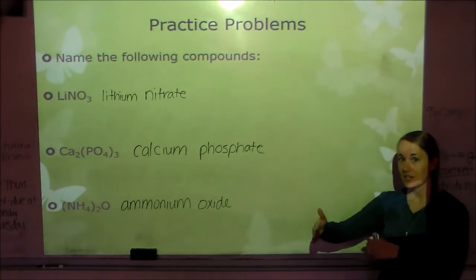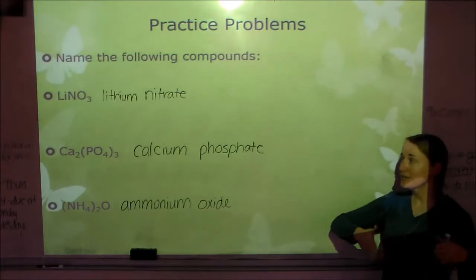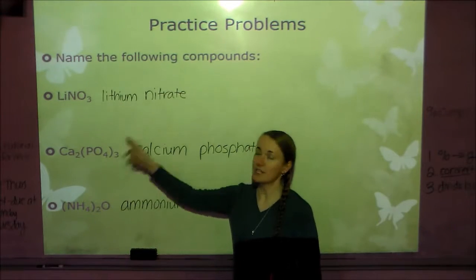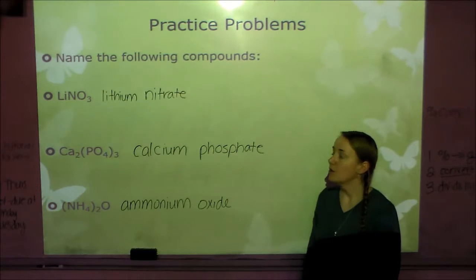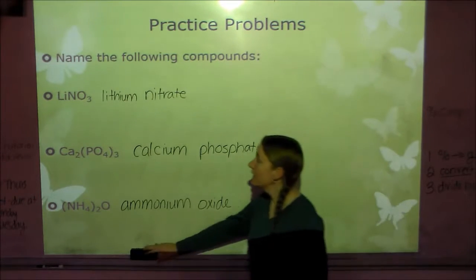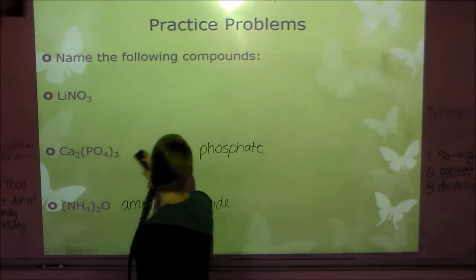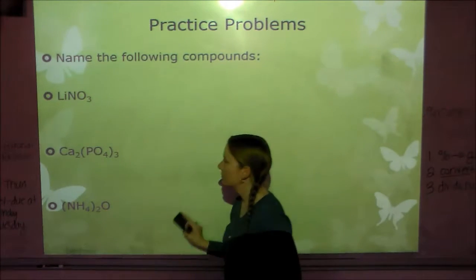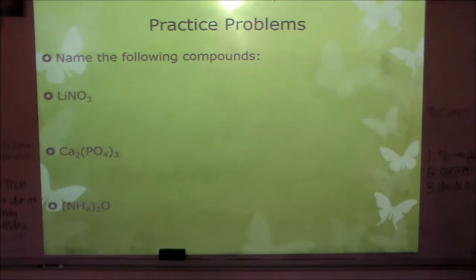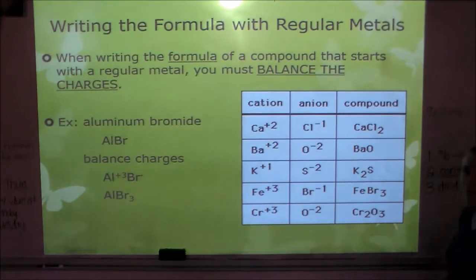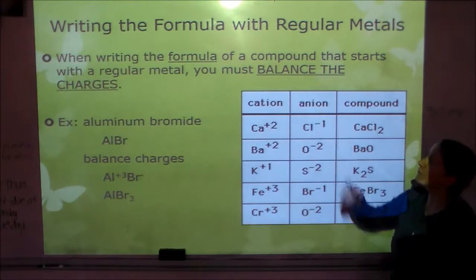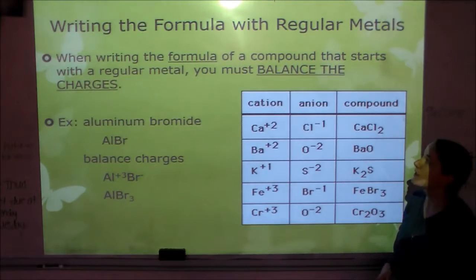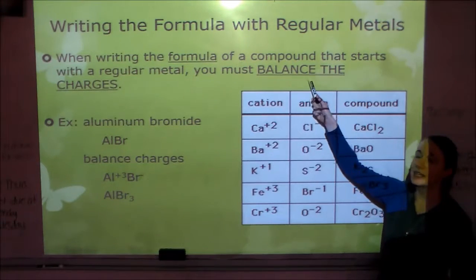Remember: just name the first element, change the ending of the second element to -ide, or if it's a polyatomic ion, just list the name of the polyatomic ion. Now we have to learn how to go the other way too — if I give you the name, you've got to be able to write the formula.